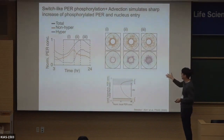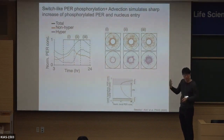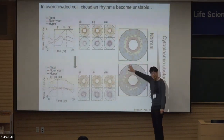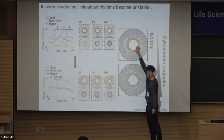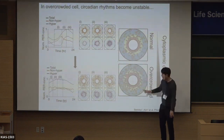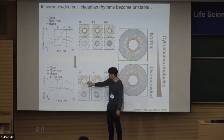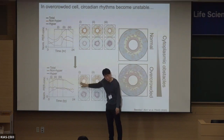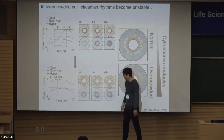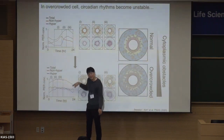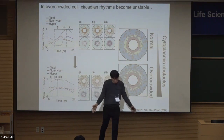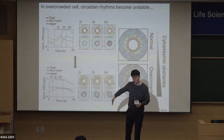One way to interfere with this collective behavior is to introduce obstacles. As the crowdedness of the cell increases, the accumulation of period protein at the perinucleus does not occur. As a result, collective nuclear entry does not happen, leading to a very weak and unstable circadian rhythm compared to the original. So this collective nuclear entry is key to generating a strong circadian rhythm.